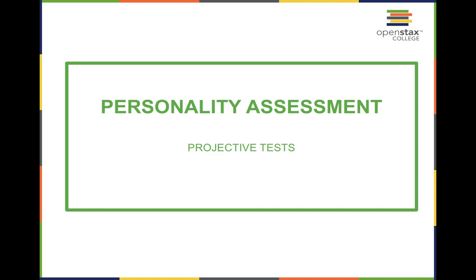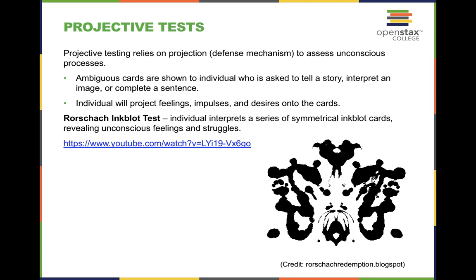Let's talk about projective tests, specifically the Rorschach inkblot test. This is a projective test where we take feelings about ourselves and cast them onto the image. The individuals delivering the test are trying to find common patterns that access the unconscious mind. Because you're projecting — a defense mechanism you may not realize you're engaging in — we can access a more unfiltered part of your mind and make connections about what may be going on behind the scenes, such as impulses, feelings, and general desires.